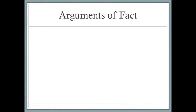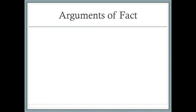Arguments of fact — let's talk about the first type of argument. An argument of fact argues whether or not something is true. That's the simplest definition: did it happen or did it not? Is it true or is it false? This is an argument of fact.